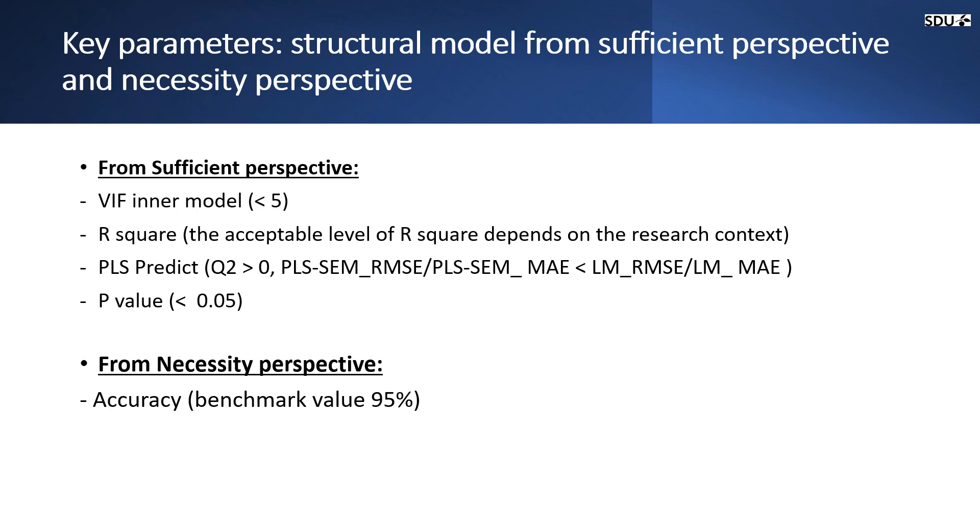While the accuracy of the CE-FDH ceiling line is per definition 100%, the accuracy of the other lines, for instance, the CR-FDH line can be less than 100%. The benchmark value 95% can help to assess the quality of the solution generated.